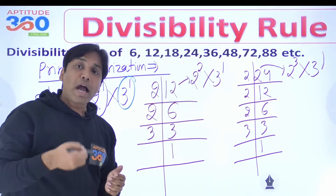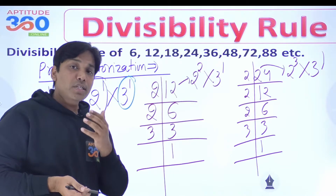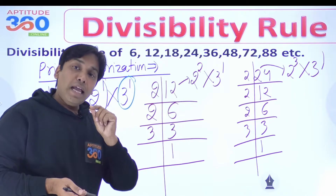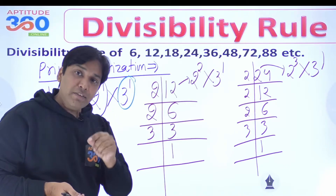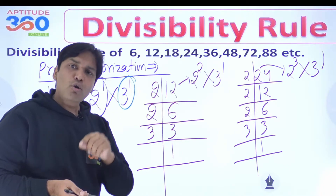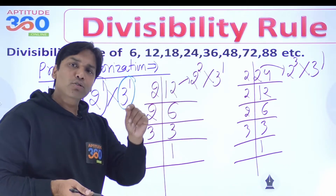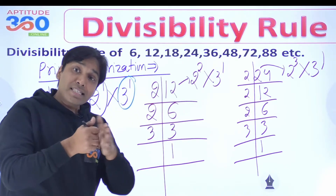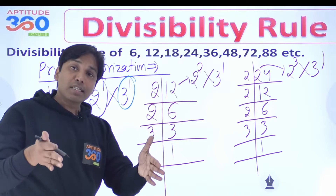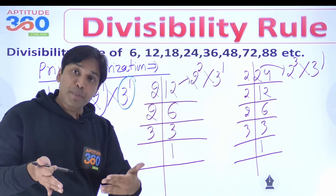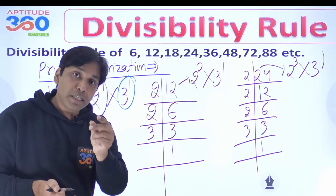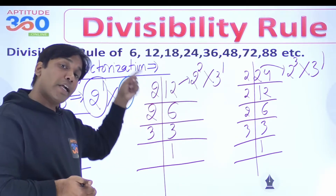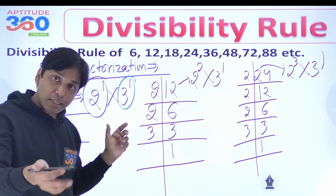You know the rule of 2 and the rule of 3. The divisibility rule of 2 says the last digit has to be even — 0, 2, 4, 6, or 8. And the divisibility rule of 3 says the sum of all the digits in the given number should be divisible by 3. So if you know the rule of 2 and the rule of 3, you can find out the divisibility rule of 6.